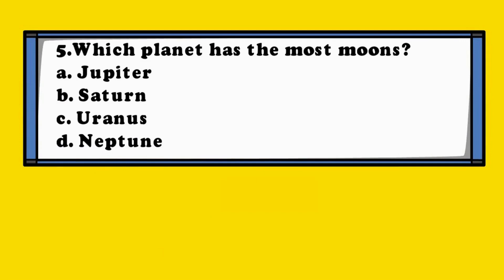Question 5. Which planet has the most moons? A. Jupiter, B. Saturn, C. Uranus, D. Neptune.